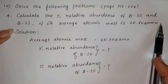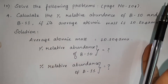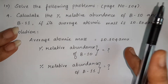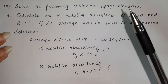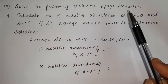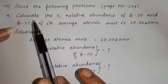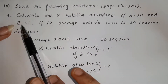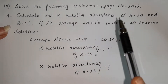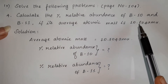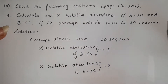In this question, Boron-10 and Boron-11 are two isotopes. So in this problem, Boron-10 and Boron-11 are available. For these two isotopes, the average atomic mass is available, that is 10.804 atomic mass units.